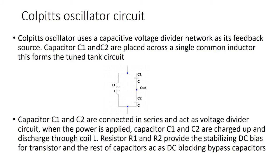The Colpitts oscillator circuit consists of an LC resonance sub-circuit connected between the collector and the base of a single-stage transistor amplifier, producing a sinusoidal output waveform. The Colpitts oscillator circuit is similar to the Hartley oscillator; the only difference is the center tapping of the tank sub-circuit made at the junction of the capacitor voltage divider network.